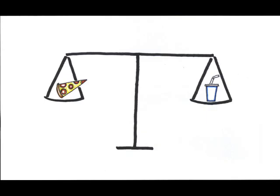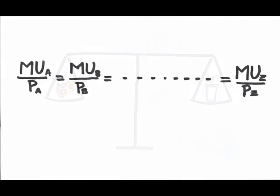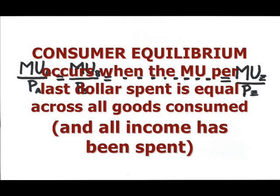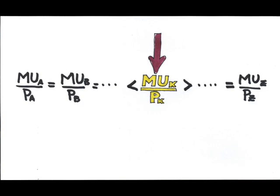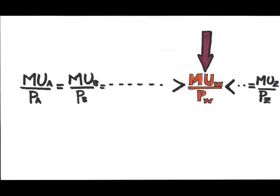Consumer equilibrium occurs when the marginal utility per last dollar spent is equal across all goods, and all income has been spent. Think about it this way. What if this isn't true? What if, say, product K gives more satisfaction per dollar than any other product? I'd do better to cut back elsewhere and buy more of product K. Similarly, if product W gives less marginal utility per dollar spent, you'd want to cut back on W until all were equal.